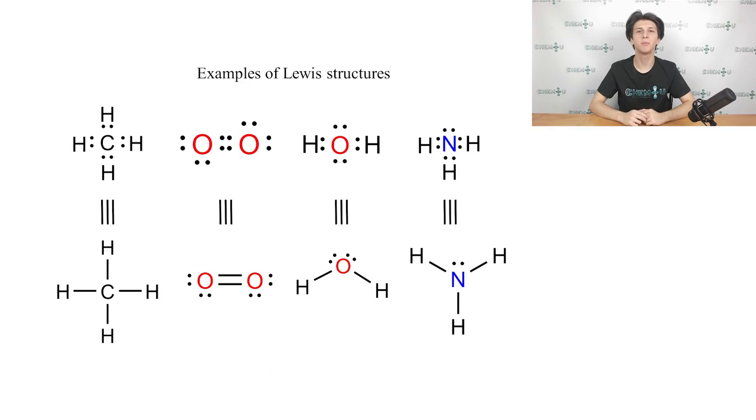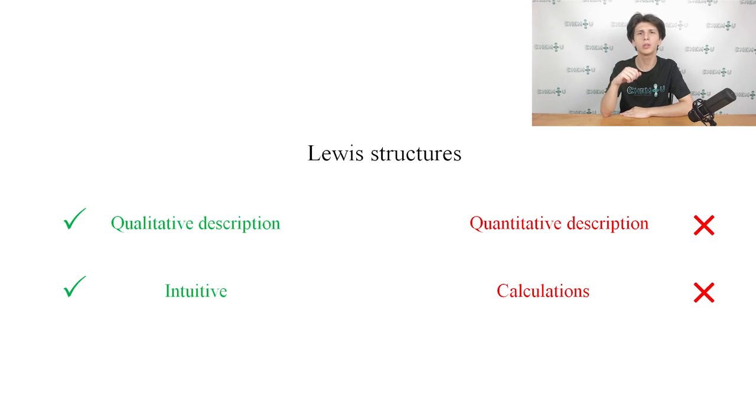Now let's look at the chemical bond theory from a bit more complex perspective than before. In the previous lectures, we talked about chemical bonds and described them using the Lewis structures. Here are some examples of them. Of course, chemical bonds can be adequately described using Lewis structures. However, this simple representation isn't sufficient sometimes. Furthermore, Lewis structures can only describe a chemical bond qualitatively and intuitively, but they don't allow us to perform any real calculations to explain chemical bonds in a quantitative sense.